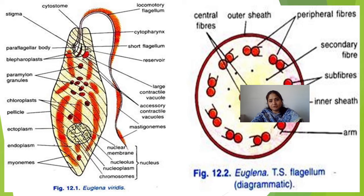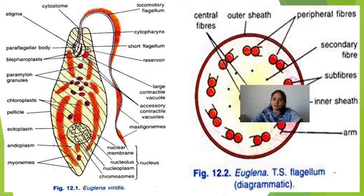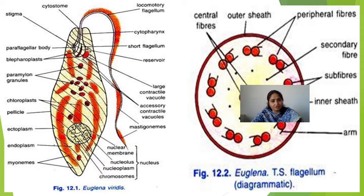The cytostome is the cell mouth, and the cytopharynx is the gullet. The alimentary canal here is not complete — it is not related to digestion or food reservoir in the usual sense; it is used to reserve and store fluid. Inside the cytopharynx, you can see a short flagellum, and the main locomotory organelle is the long flagellum.